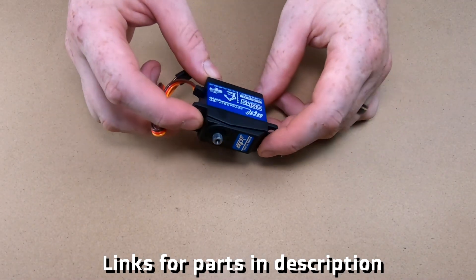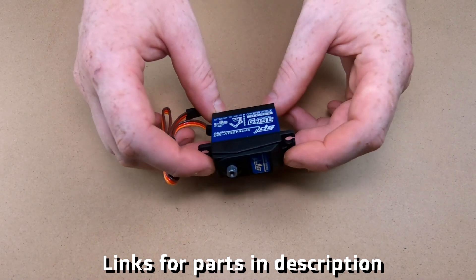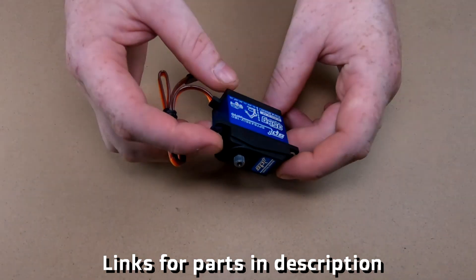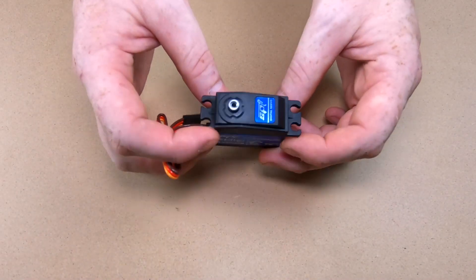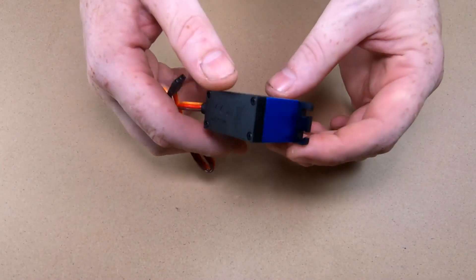This is just an update to our budget crawler build and we've picked up a few more parts to upgrade it. We picked up a 35kg servo for it. It's probably a little bit overkill but it was only about a $2 difference between the 25 and the 35kg so we went with the big one.